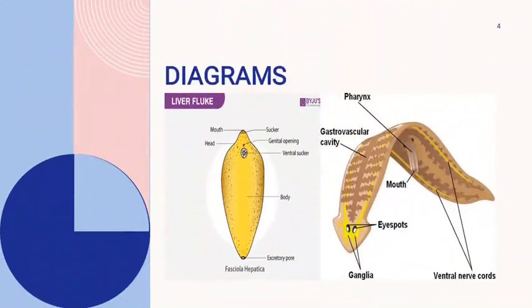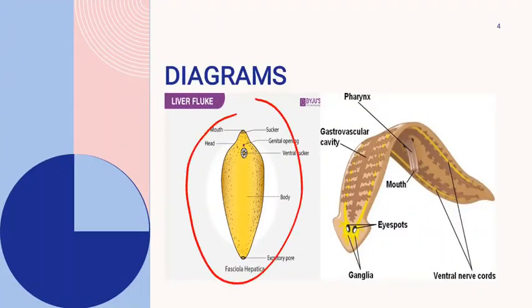The liver fluke has a body that is compressed, and that is planaria. We have studied the three terms that are the typical characteristics of Platyhelminthes: they have triploblastic organization, they are acoelomates, and their body is bilaterally compressed.